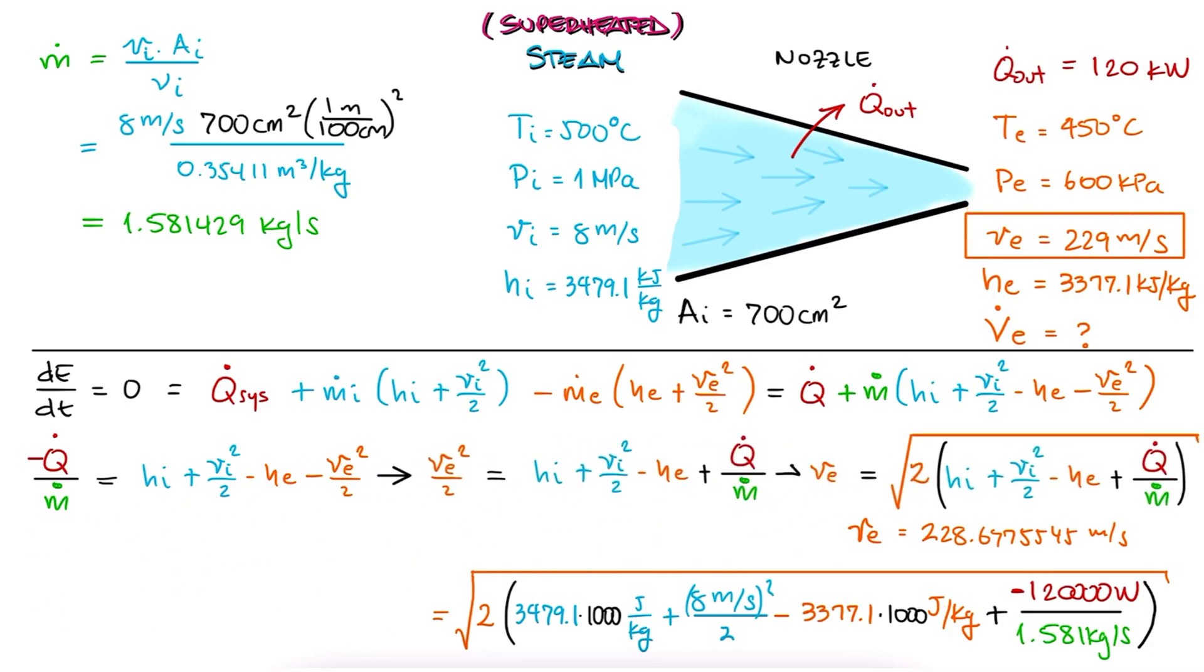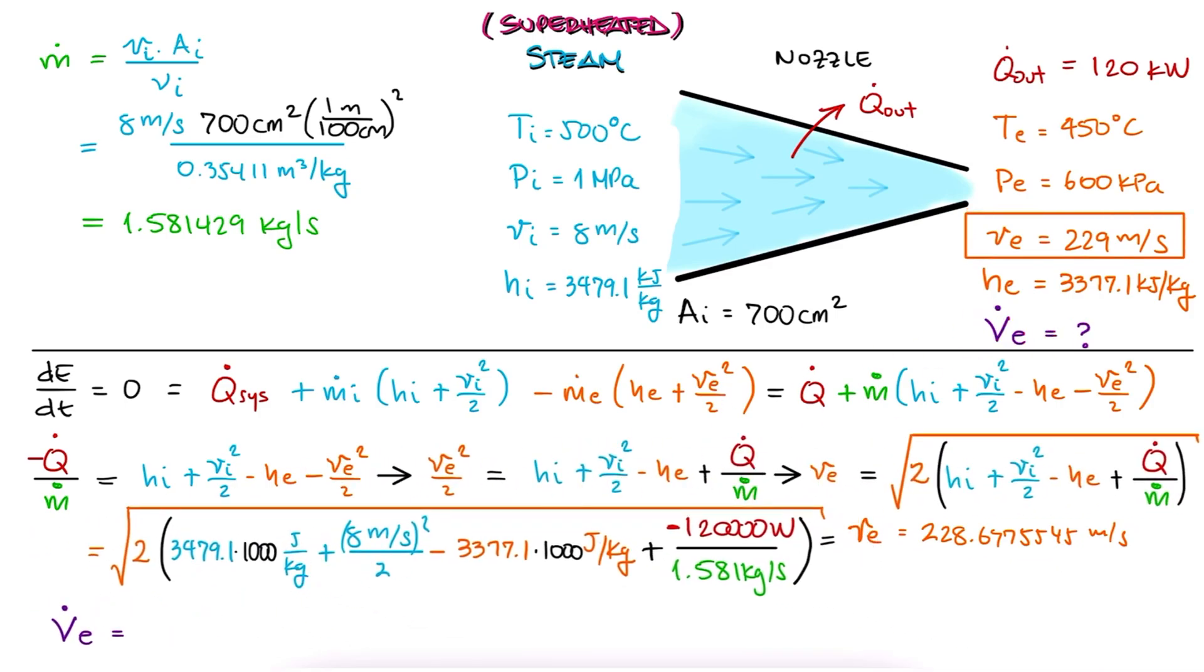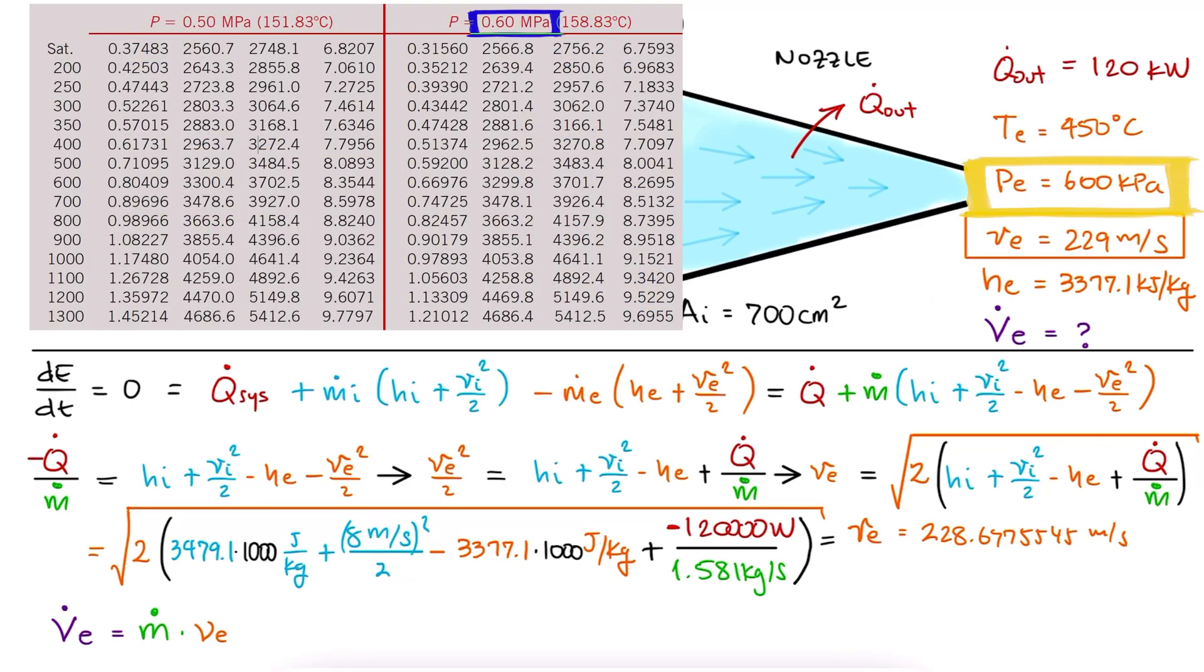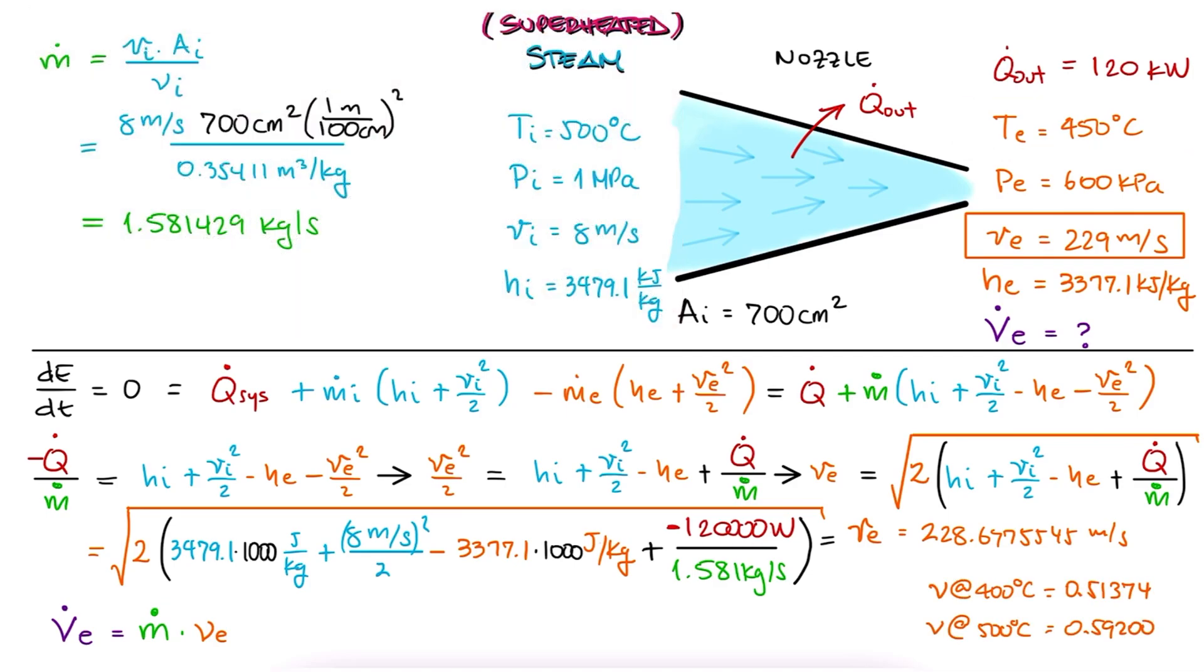Now for the volumetric flow rate, which is the mass flow rate times the specific volume at the exit, we don't use velocity times exit area because we don't have the exit area here. We look up the specific volume at 600 kPa and 450 degrees Celsius and interpolate again, between 400 and 500, to write it as 0.55287 cubic meters per kilogram. The volumetric flow rate would therefore be the mass flow rate times the specific volume.